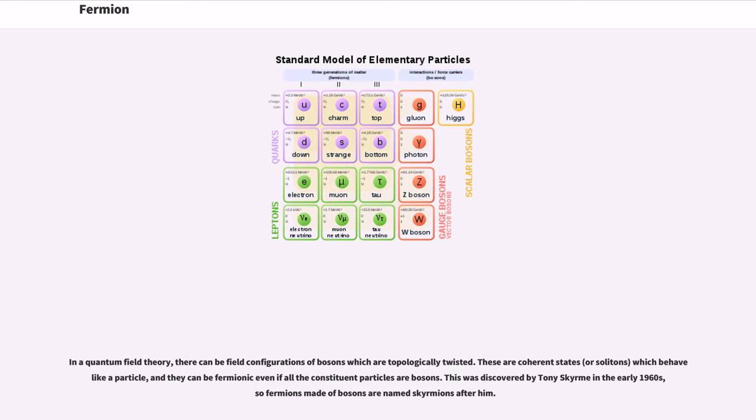In a quantum field theory, there can be field configurations of bosons which are topologically twisted. These are coherent states, or solitons, which behave like a particle, and they can be fermionic even if all the constituent particles are bosons. This was discovered by Tony Skyrme in the early 1960s, so fermions made of bosons are named skyrmions after him.